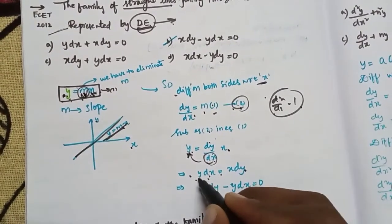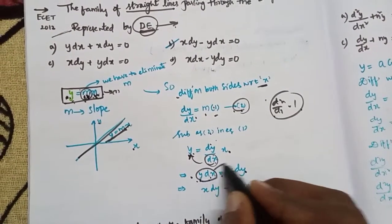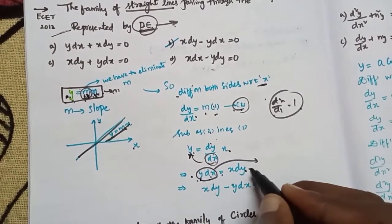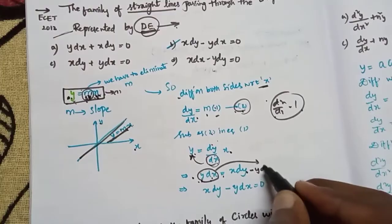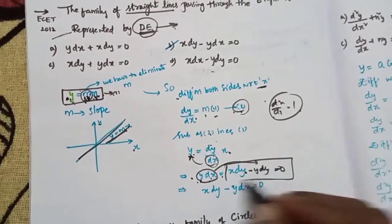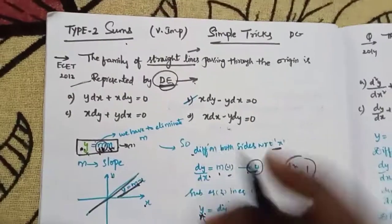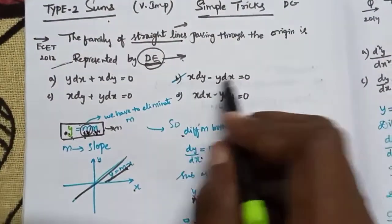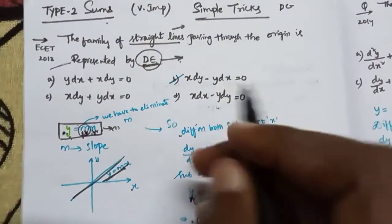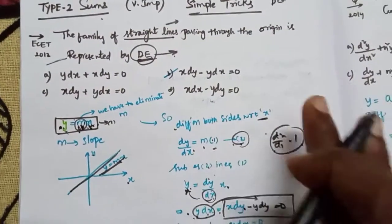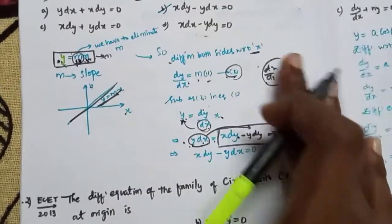So y·dx minus x·dy is equal to 0. This is the differential equation. It is simple and it is time efficient.